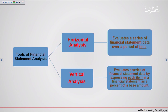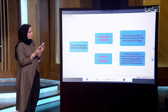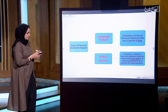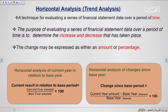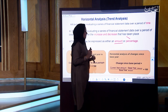Horizontal analysis evaluates a series of financial statement data over a period of time — for example, comparing this year's data with the previous year's data. In vertical analysis, we evaluate financial statement data by expressing each item as a percentage within the statement. Horizontal analysis can also be called trend analysis. We use it to determine the increase or decrease in financial statement data over a specific period, expressed in amounts or percentages.